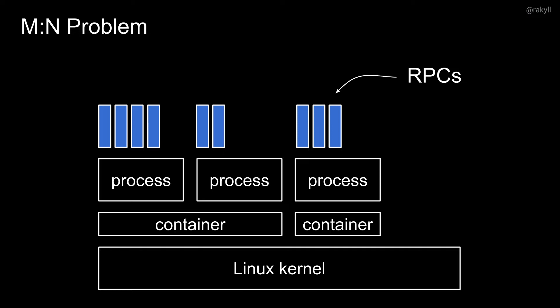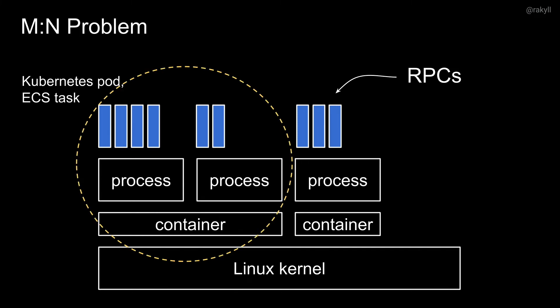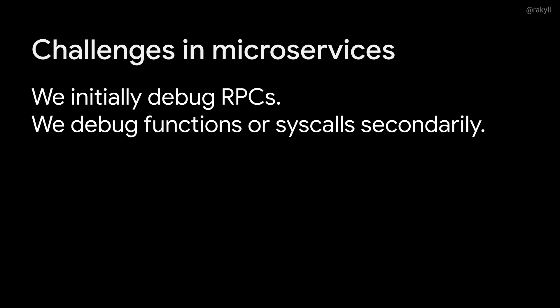In a containerized world, we isolate workloads with containers, but beyond this we logically group them as Kubernetes pods running in a namespace or an ECS task in a logical ECS service. These are logical groupings, but it's important to collect them as context as we gather diagnostics data, because it's how we navigate our dashboards. When we see a service being down, we want to understand which cluster, which namespace, which pod. The other significant difference is we don't debug functions or syscalls like in the days of monoliths — everything is an RPC or a REST request, and we need to view diagnostics data from the perspective of RPCs.